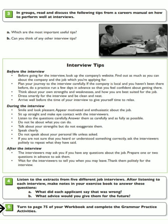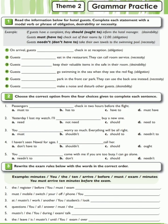Turn to page 75 of your workbook and complete the grammar practice activities. Grammar practice: read the information below for hotel guests. Complete each statement with a modal verb or phrase of obligation, desirability, or necessity. Example: 'If guests have a complaint, they should / ought to inform the hotel manager.' — desirability.